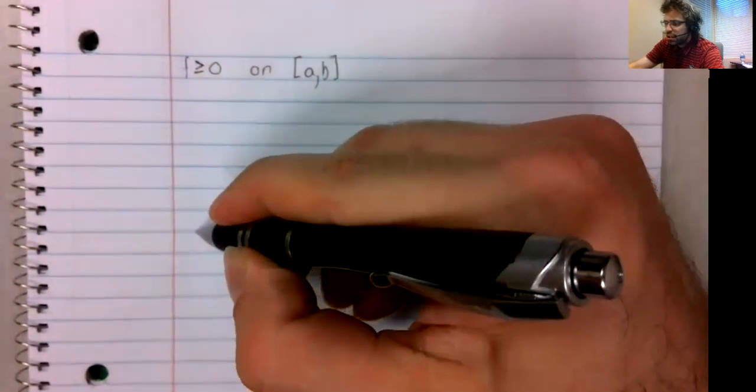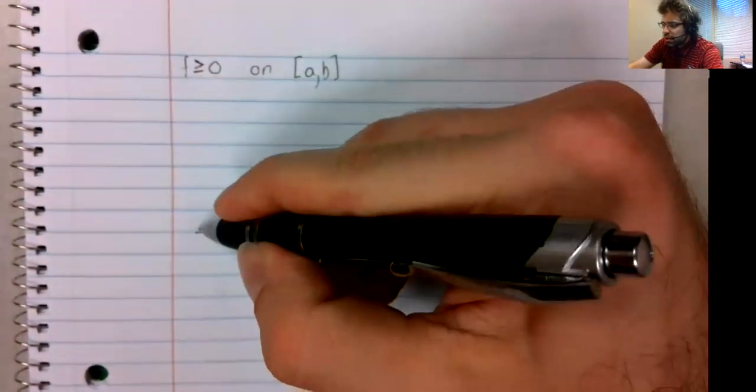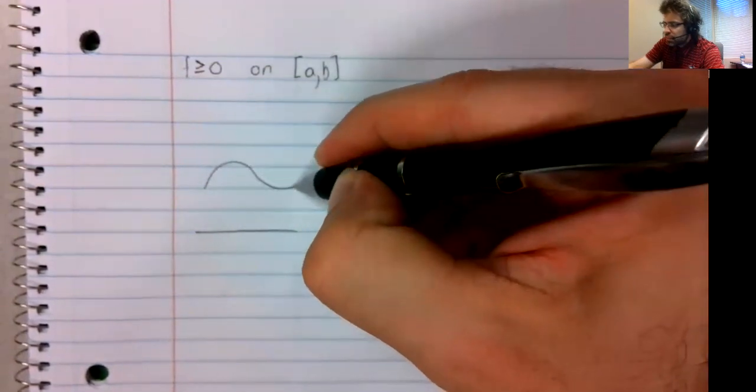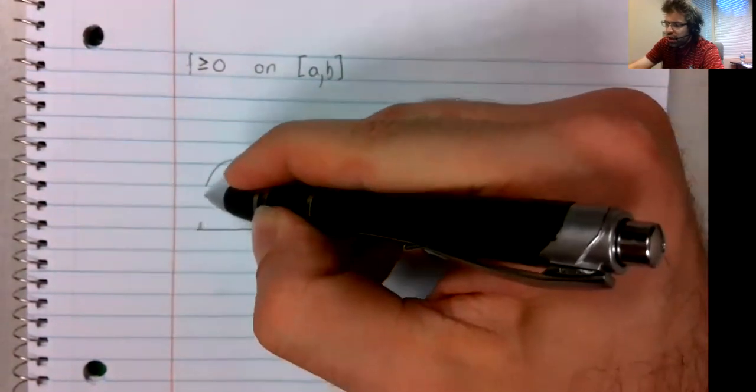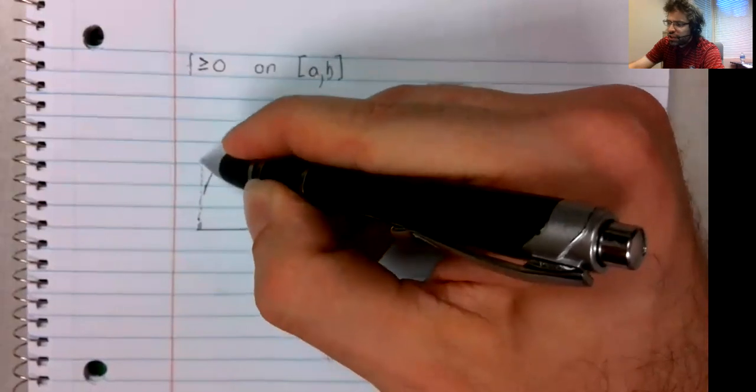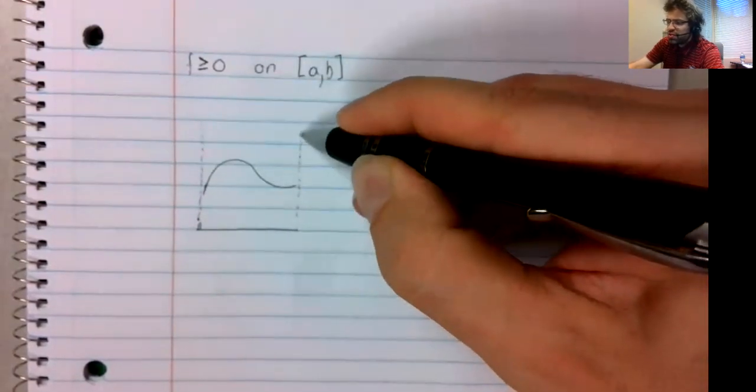Defining the average value of a function provides a nice application of area under a curve. So say we have a function, we'll assume for now it's not negative, on some interval from A to B. And you want to define the average value of this function.